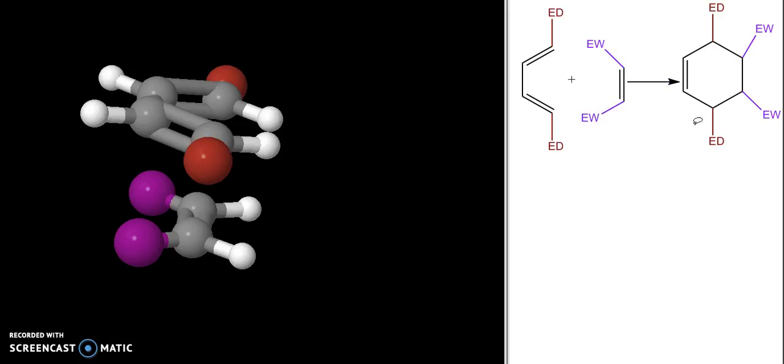We get a six-member ring product and the electrons move in the manner shown by these arrows in a concerted fashion to give us the product.